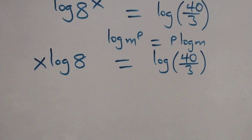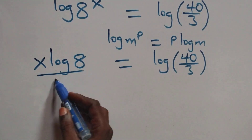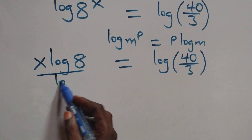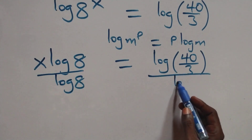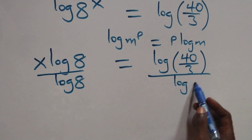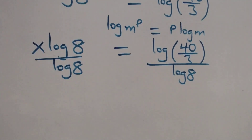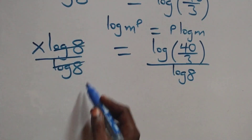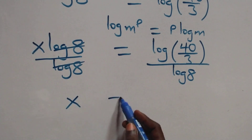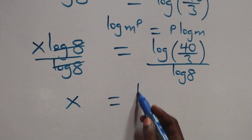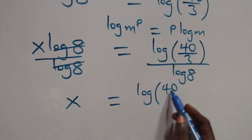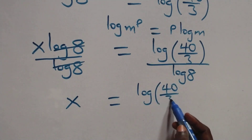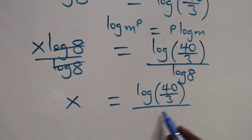Then here we divide both sides by log 8 — divide this side by log 8, also divide this side by log 8 — which implies log 8 cancels each other, and we have x equals to log 40 over 3, all over log 8.